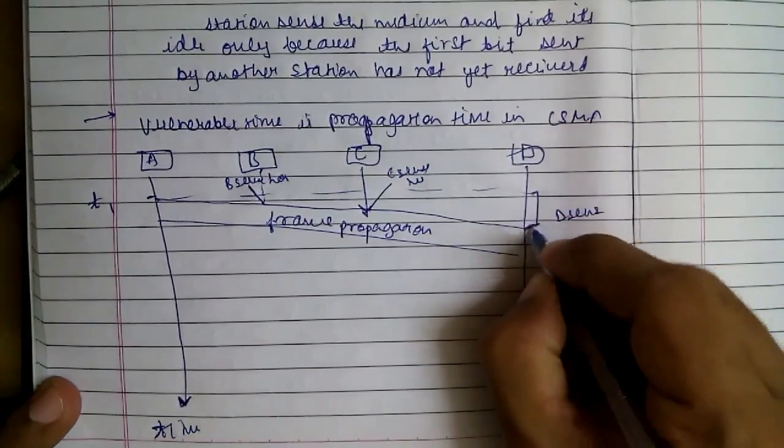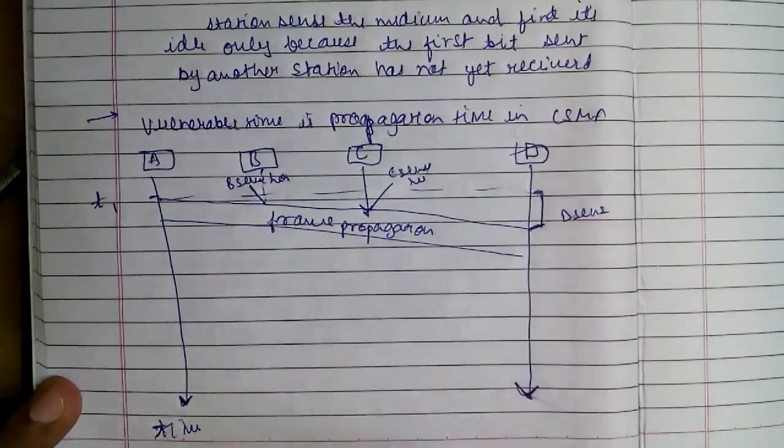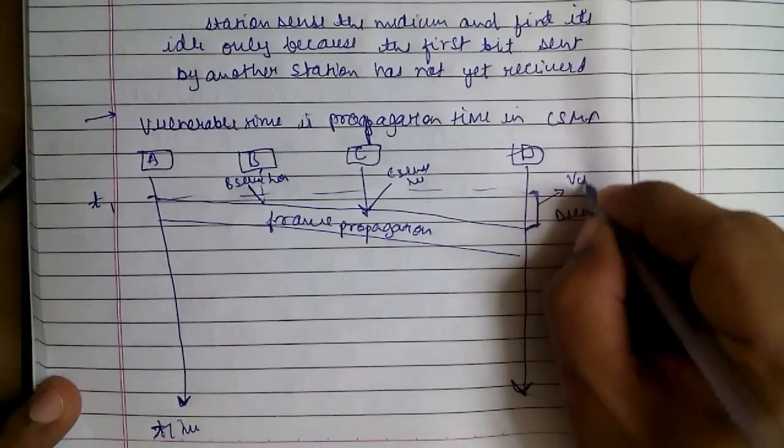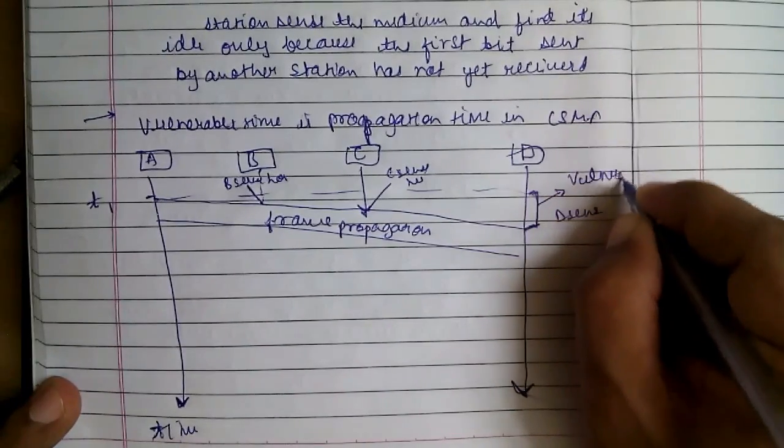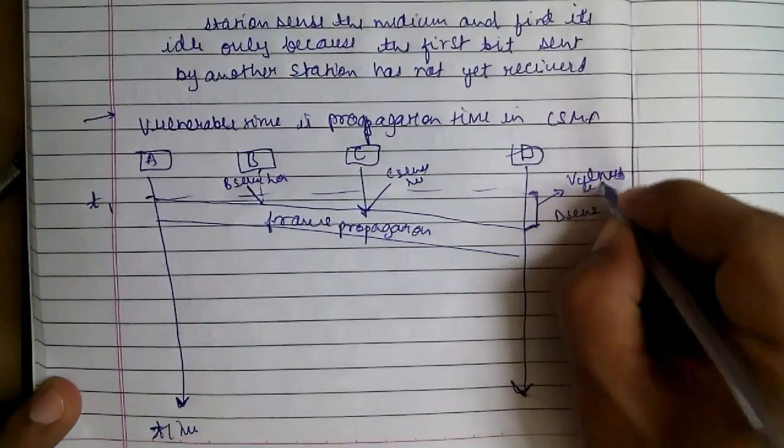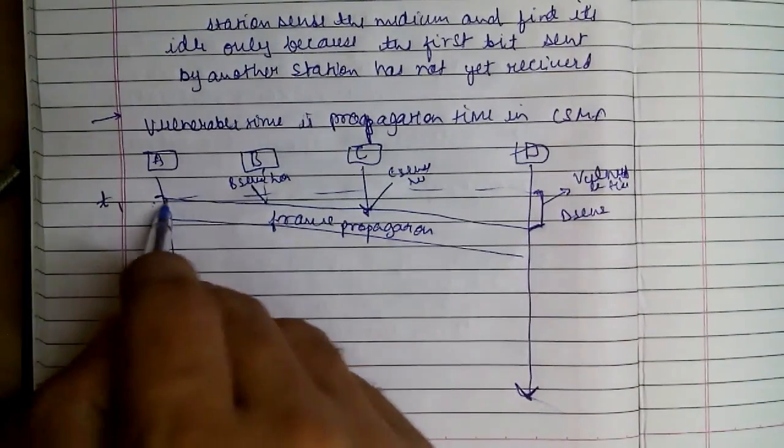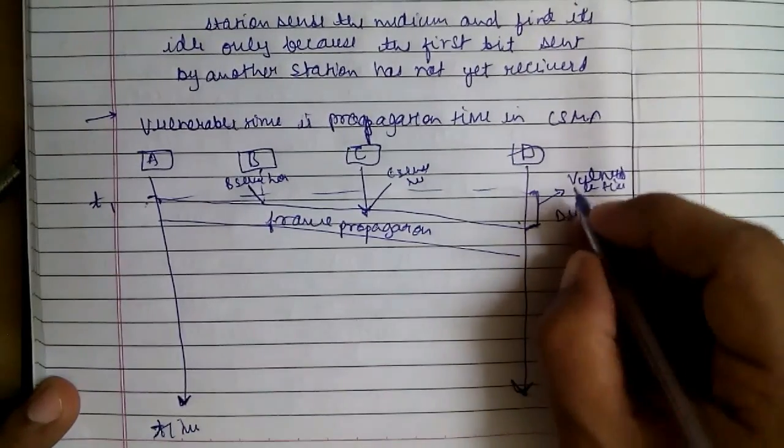So this gap, that is this amount of time, is vulnerable time, which is the same as propagation time - the time taken to travel from A to D.